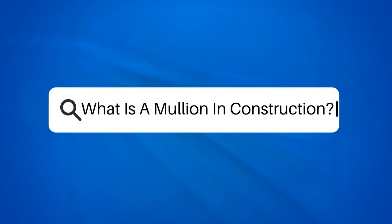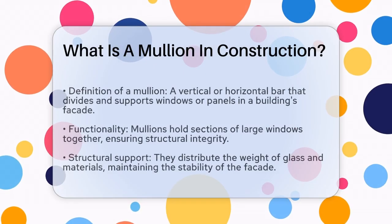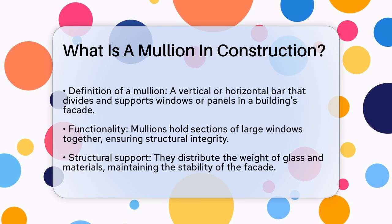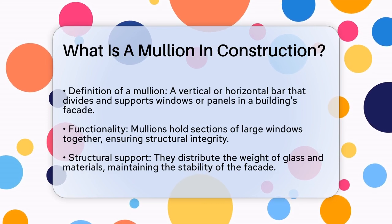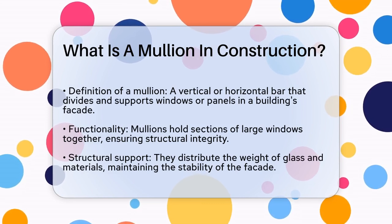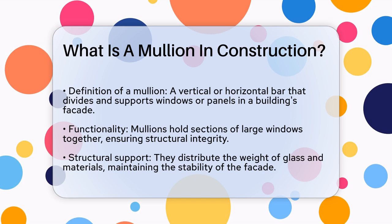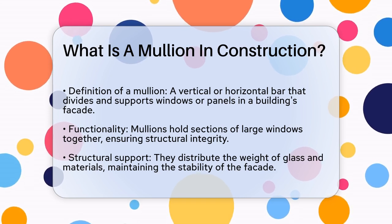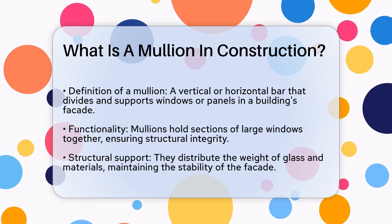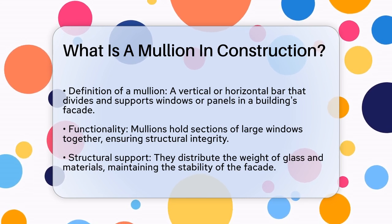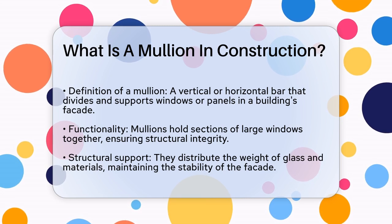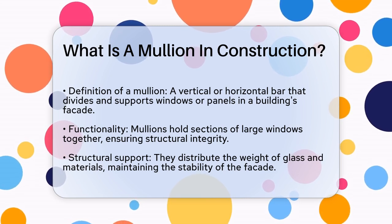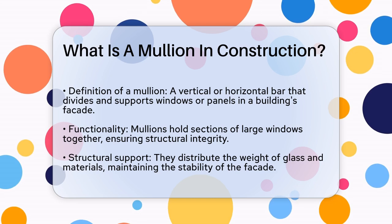What is a mullion in construction? If you're curious about the components that make up the windows and facades of buildings, you might have come across the term mullion. Let's break down what a mullion is and why it's so important in construction. A mullion is essentially a vertical or horizontal bar that divides and supports a series of windows or panels within a building's facade. Imagine a large window split into several smaller sections — the mullion is the structural element that holds these sections together.